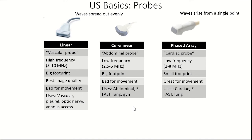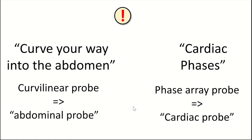The phased array is known as the cardiac probe — it's also good for deep structures and especially good for imaging movement. I remember it as the cardiac probe by thinking about the cardiac phases. To summarize: curve your way into the abdomen — curvilinear is the abdominal probe; cardiac phases — phased array is the cardiac probe; and the linear probe is the vascular probe, like a linear blood vessel.